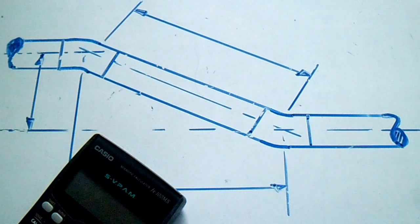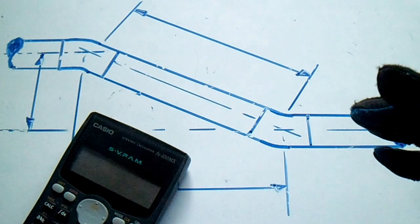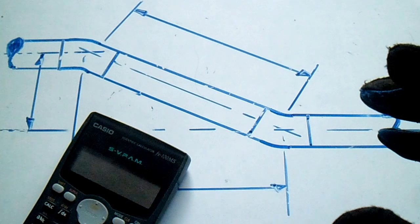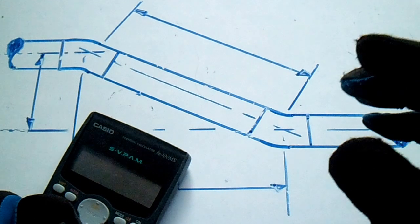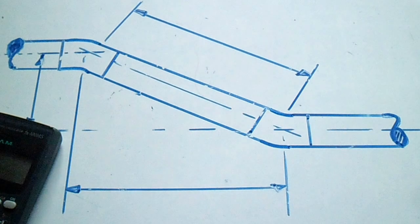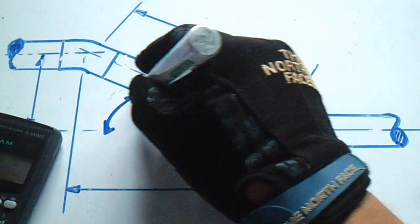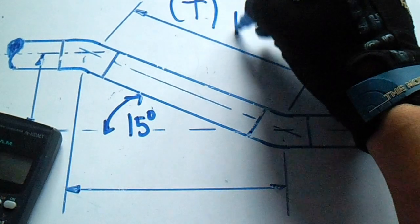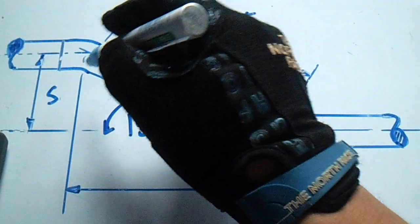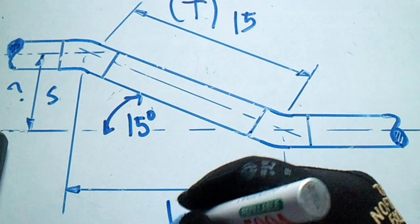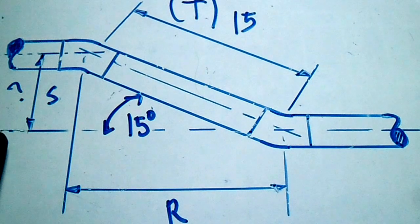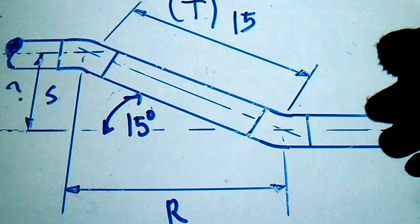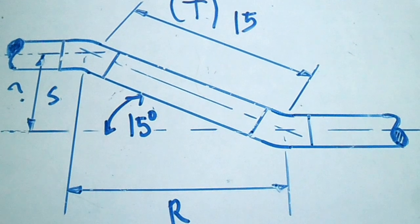Hi guys, welcome to Piping Welding and DT channel. This video is about how to find the length of a side when the given is an angle. This is easy solving. We have 15 degrees as the angle, travel = 15, and we need to find the set and the run. The formula is: set equals travel multiplied by sine.